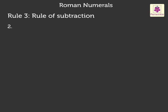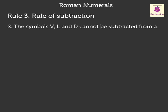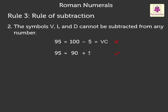The symbols V, L, and D cannot be subtracted from any number. For example, 95 cannot be written as 100 minus 5, that is VC. Instead, 95 should be written as 90 plus 5, which is XCV.